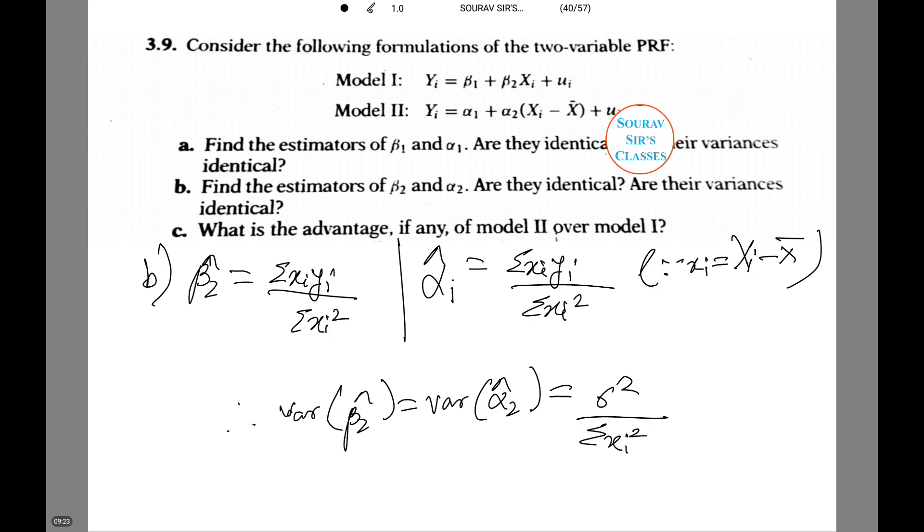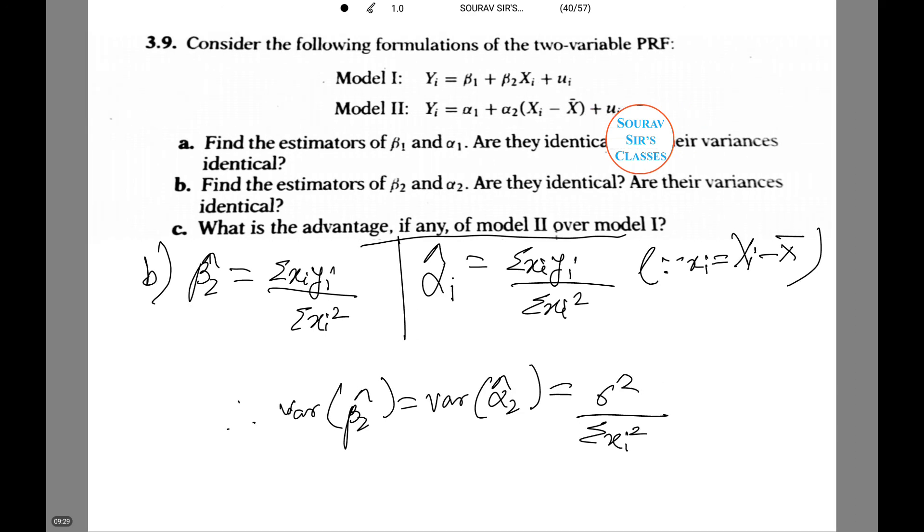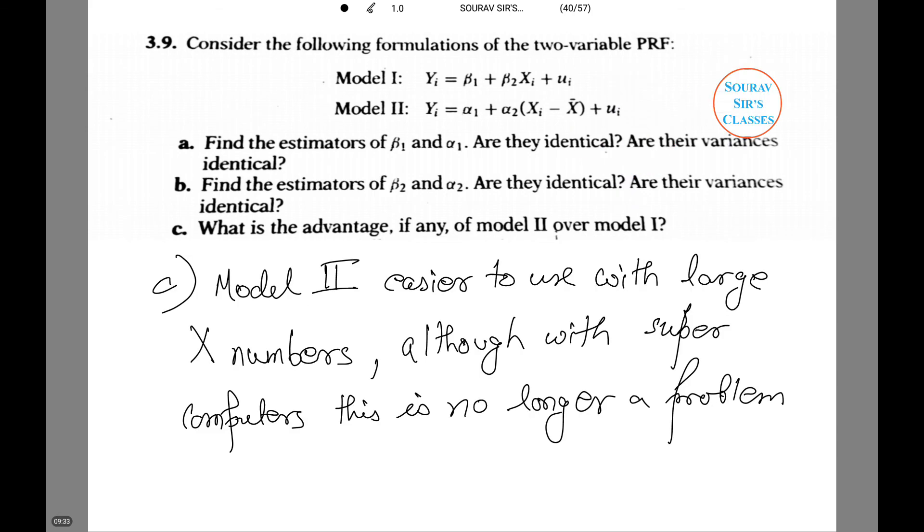Now let's do the last one, that is what is the advantage if any of model 2 over model 1. Model 2 is easier to use with large x numbers although this is not a problem of the present times with supercomputers and high speedy computers with processing power that reduces this problem.